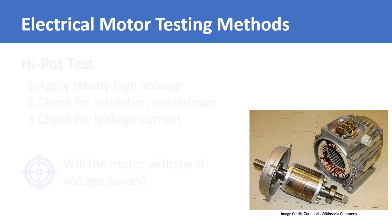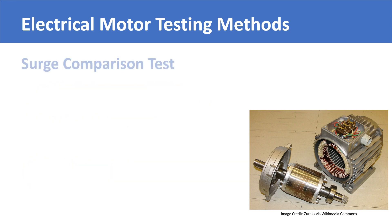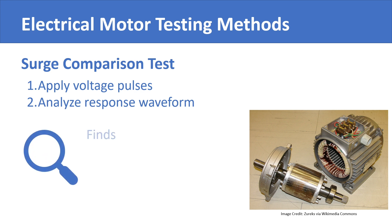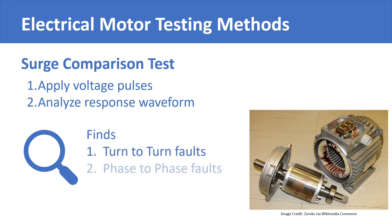Another similar test is known as the surge comparison test. It is like the high pot test except that it uses voltage pulses instead of a steady state voltage. It then analyzes the response waveform of the pulses to detect any anomalies in the winding insulation. It may be used for testing turn-to-turn faults, phase-to-phase faults, or insulation degradation.